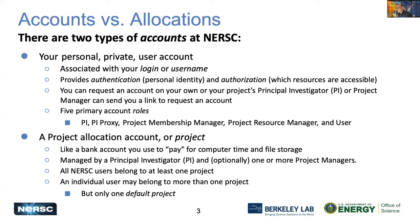We can always help you with questions if you don't. There are five primary types of roles for users in our system: the principal investigator, the PI proxy, who is somebody who can do things for the PI — basically their right-hand assistant — project membership managers, project resource managers, and of course the ubiquitous user.